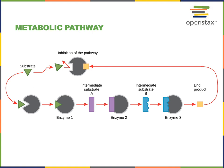A metabolic pathway is a series of enzymes working together to convert a substrate into an end product. In the illustration here, the substrate represented with a green triangle is converted into the end product represented with a yellow square. Enzyme one converts the substrate into intermediate substrate A, represented with a purple rectangle. Then enzyme two converts intermediate substrate A to intermediate substrate B, and enzyme three finishes the conversion, converting intermediate substrate B into the final end product.